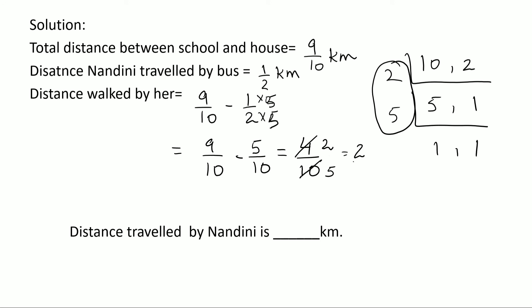so that equals to 2/5. Therefore, distance traveled by Nandini is 2/5 kilometer. I hope this is clear to all. Thank you.